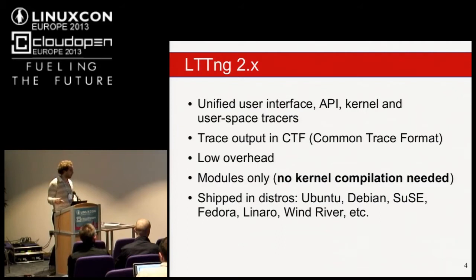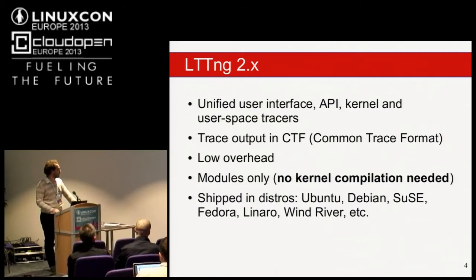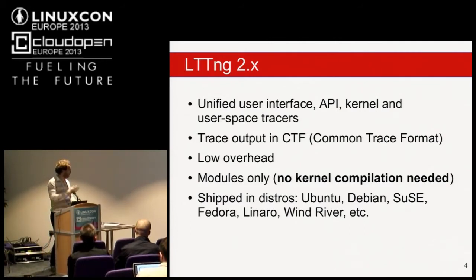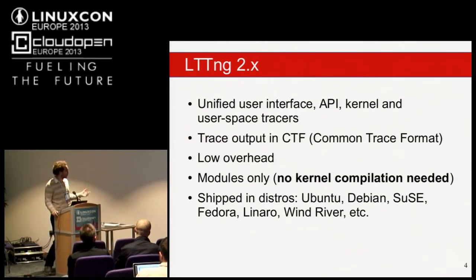For kernel tracing, it's now only modules — we don't need to recompile the kernel anymore. Before LTTng 2.x, we had to apply patches on the kernel and then rebuild. Now it's only modules, and most of the major distros are starting to ship packages for the toolchain.